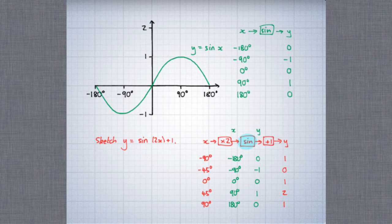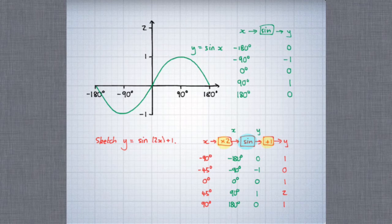Now we can see what transformations have to be applied. First of all, the y-coordinates have all increased by 1, so the effect of this plus 1 is to move the entire graph one unit upwards — one unit parallel to the y-axis. The x-coordinates have all been divided by 2, so the effect of this times 2 is to squash the whole graph parallel to the x-axis, scale factor 2 — you might like to think of that as a stretch, scale factor one half.